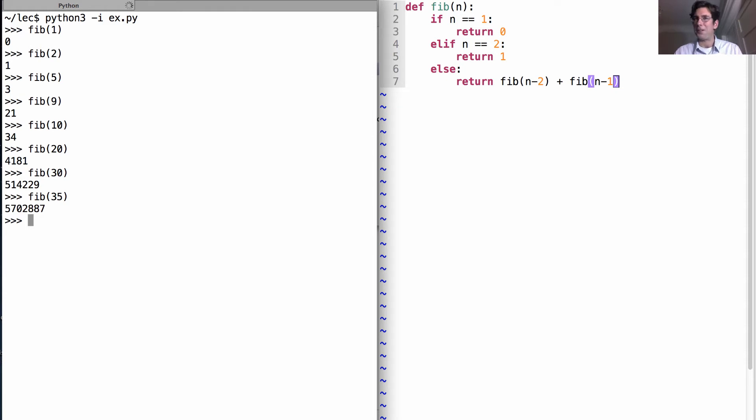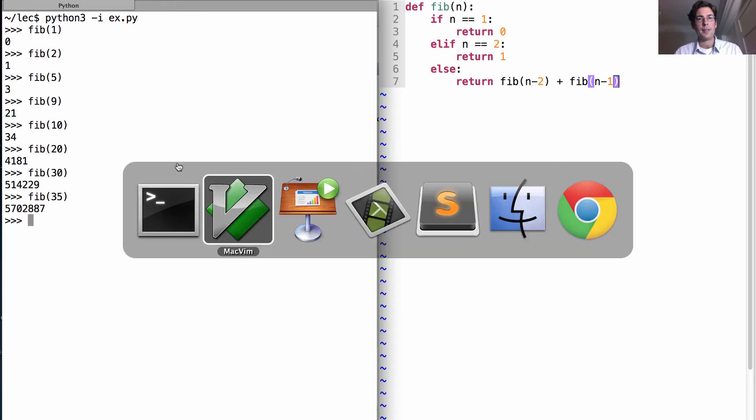Now that took a while, even though computers are really fast right now. Why is that? Well, it turns out that the tree recursive process that we went through in order to compute 5,000,000 was a big one. Let's take a look.